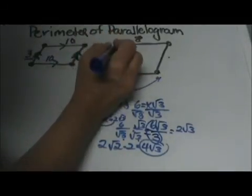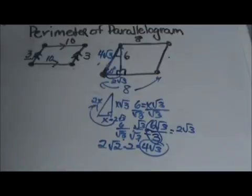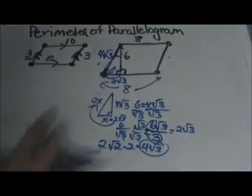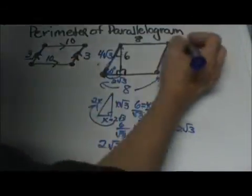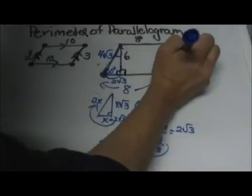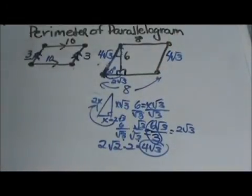And guess what? That hypotenuse is the side of our parallelogram. So if this side is 4√3 I can label this side 4√3. Now I can add the 4 sides up.